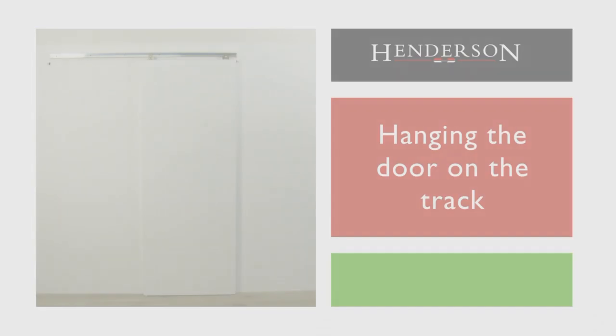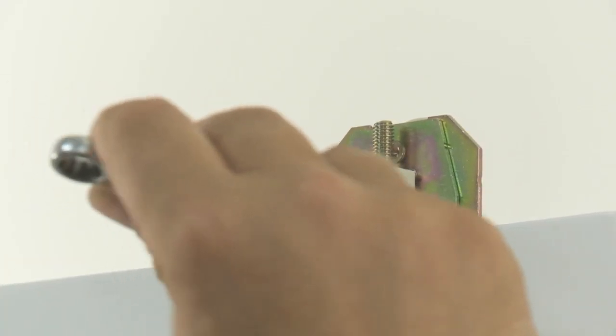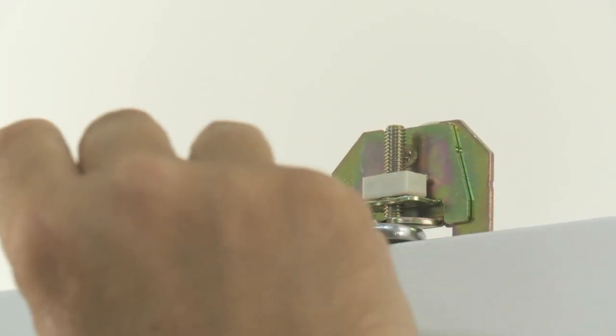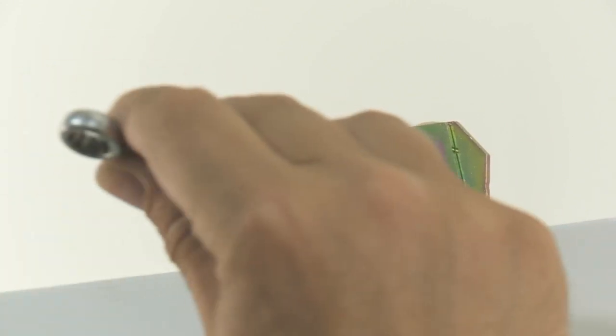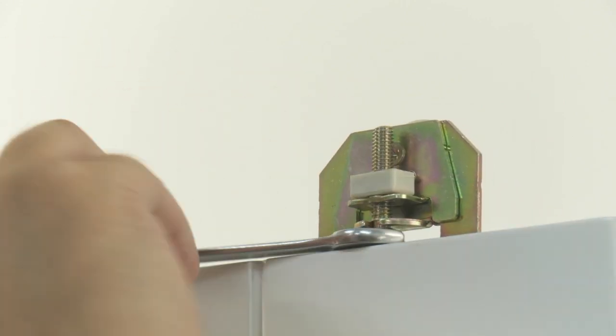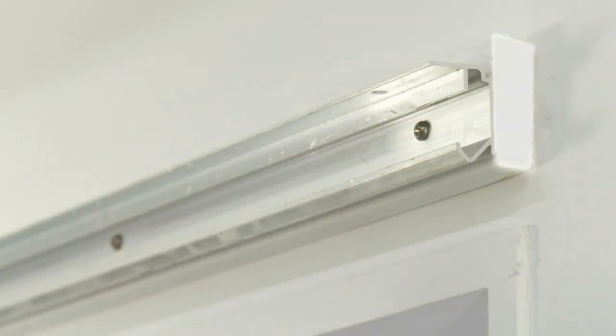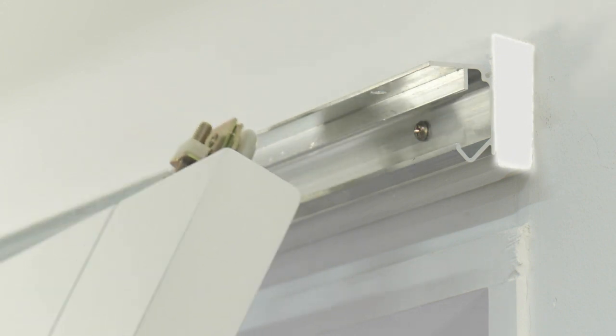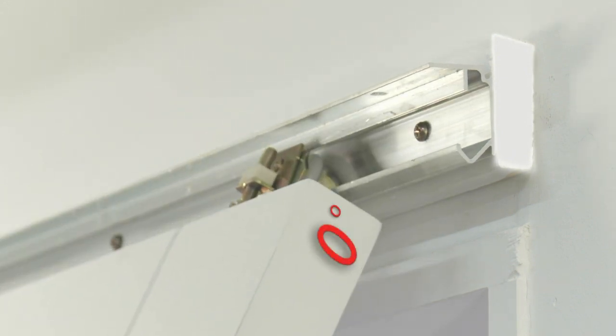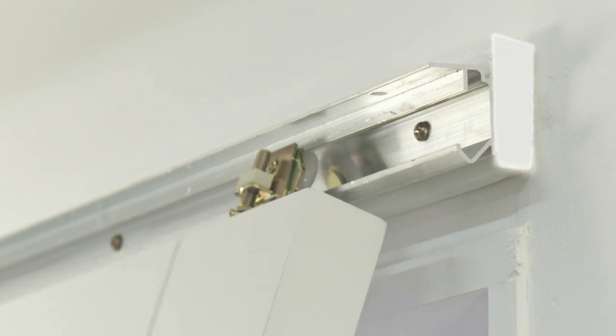Hanging the door on the track. Now we can hang the door. Adjust the hangers to their mid-set position. There are two ways of hanging the door on the track. The easiest way is to slide the door in from the end of the track. However, if the space is limited and this is not possible, then you can lift the door onto the track at a 30 degree angle to locate the hangers and then gently hang the door vertically.